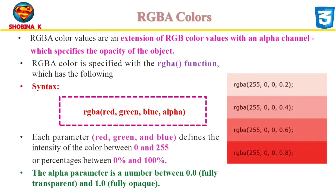RGBA color values are an extension of RGB color values with an alpha channel. RGBA stands for red, green, blue, alpha. Alpha specifies the opacity of a color, and the alpha parameter is a number between 0.0 and 1.0. RGBA is a type of CSS color value that allows us to set a color and also its opacity and transparency. RGBA color is specified with the RGBA function. The RGBA function works like the RGB function, but while the RGB function accepts three values — red, green, and blue — the RGBA function accepts a fourth value called the alpha channel.